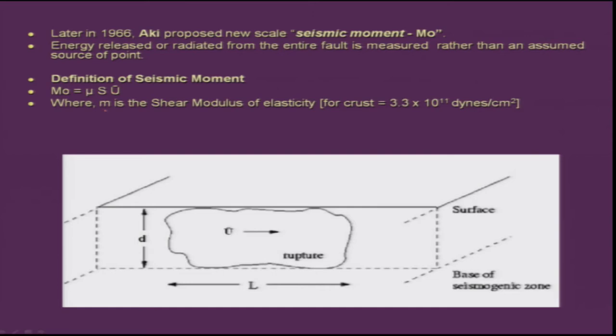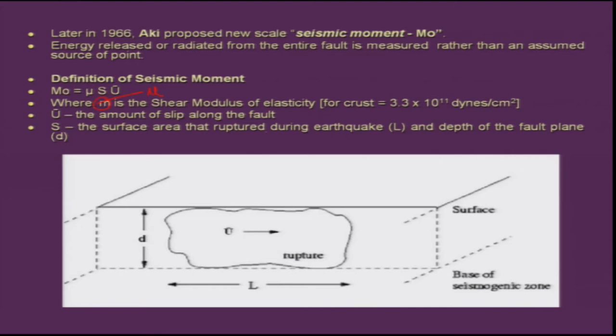Mu is the shear modulus of elasticity — for the crust it is around 3.3 × 10¹¹ dynes per centimeter squared. Then we have the slip, which is the amount of displacement that occurs during an earthquake along the fault plane. And then we have the surface area — how much area was ruptured during the earthquake.